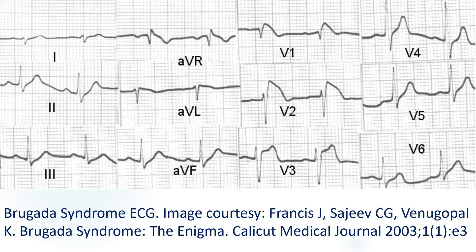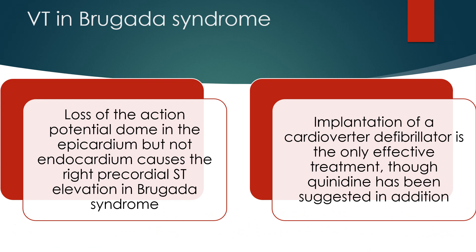Brugada syndrome is characterized by an apparent RBBB pattern with ST elevation in V1 to V3, associated with life-threatening cardiac arrhythmias, typically polymorphic VT. There is a tendency for familial occurrence and it is associated with SCN5A mutation and several other mutations. Loss of the action potential dome in the epicardium but not the endocardium causes the right precordial ST elevation in Brugada syndrome. Implantation of a cardioverter defibrillator is the only effective treatment, though quinidine has been suggested in addition.